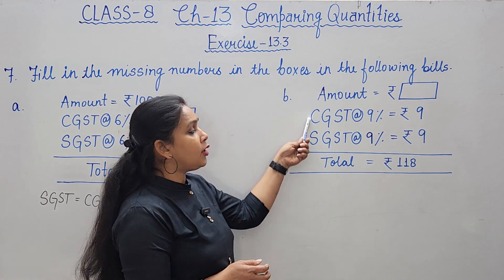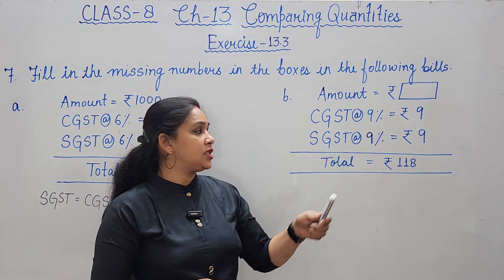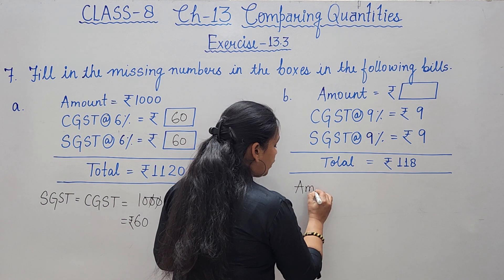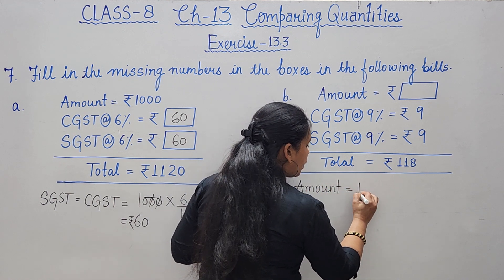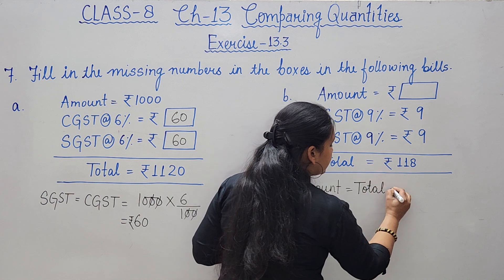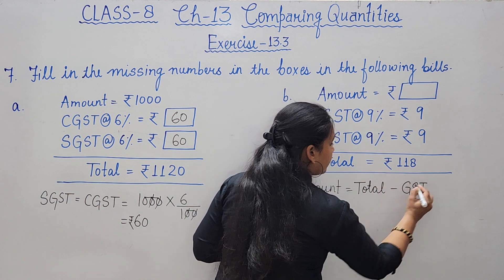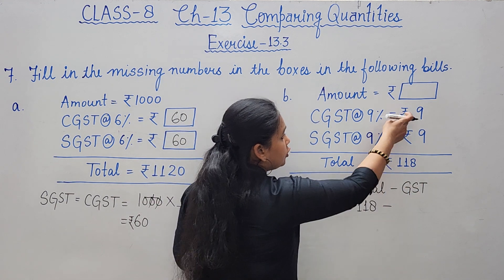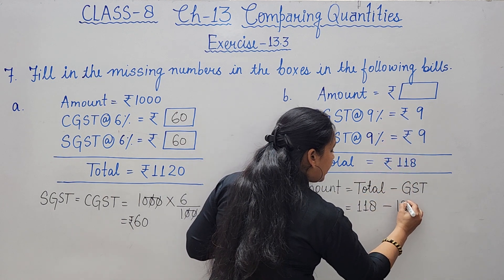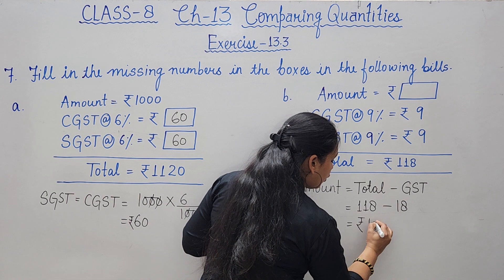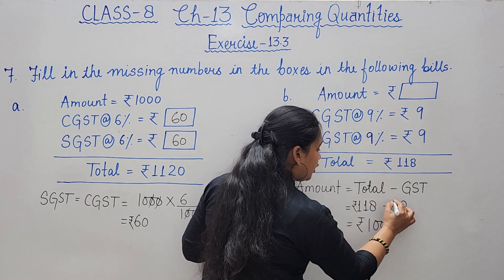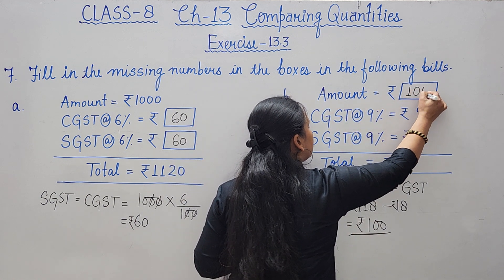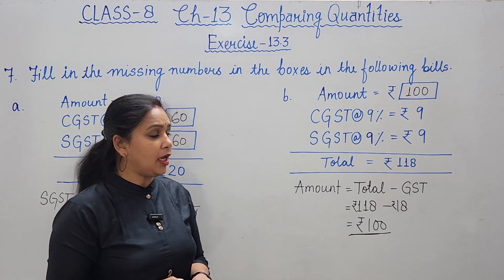GST total is 18 rupees (9+9). To find amount: total minus GST = 118 - 18 = rupees 100. So the object's price was rupees 100. Both CGST and SGST values in rupees are 9 rupees each.